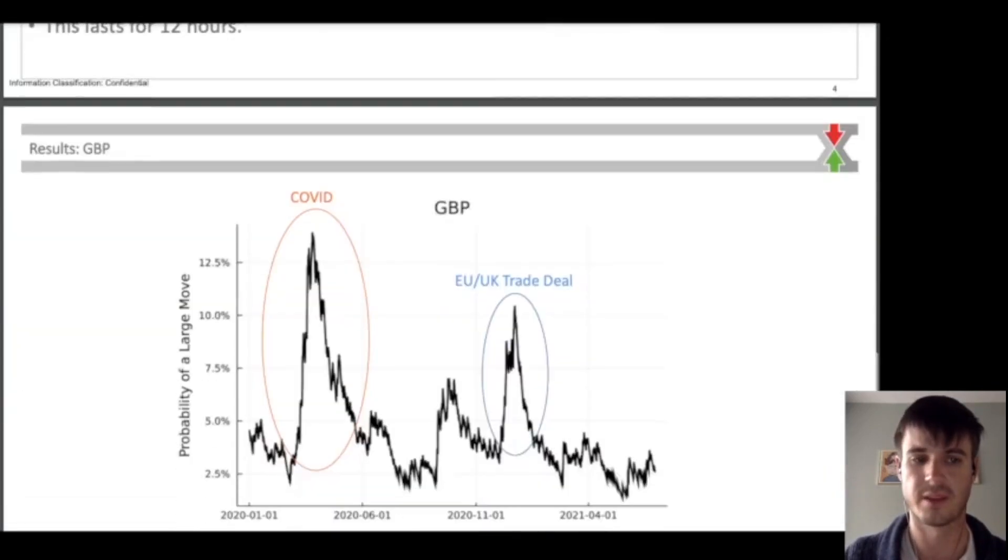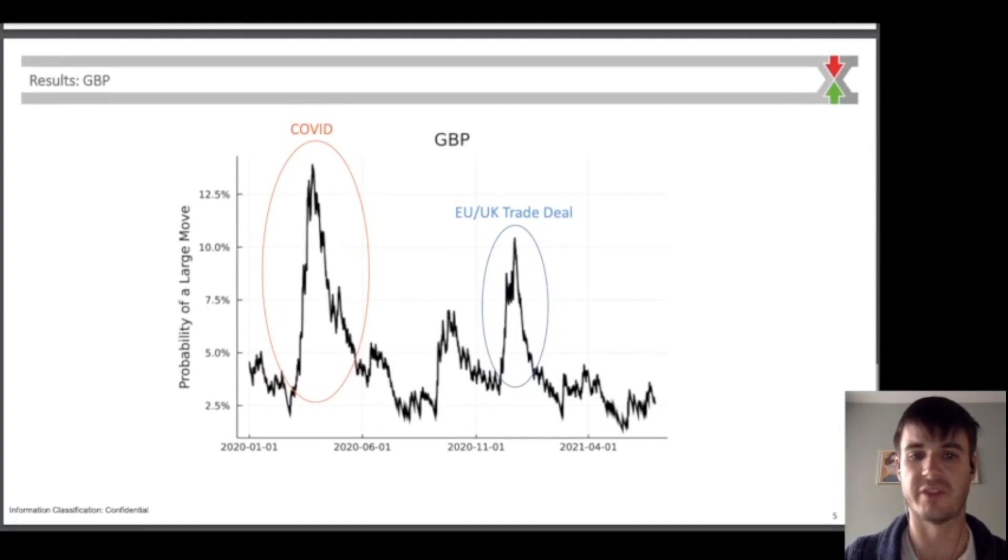When we plot the probability of an event over time, we find that there was a rapid increase during the COVID crisis in early 2020 and a similar increase in late 2020 as the EU and UK were negotiating their trade deal.